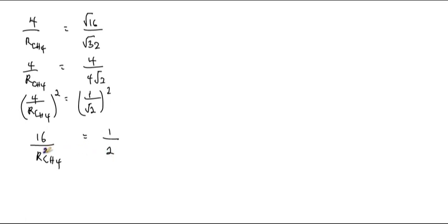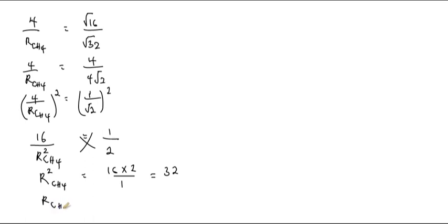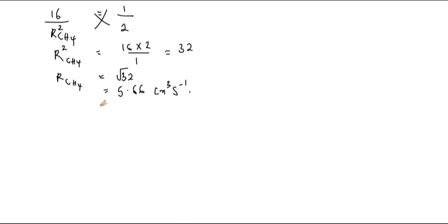Making r(CH₄) the subject by cross-multiplying: r(CH₄) = 4√2, so r²(CH₄) = 16 × 2 / 1 = 32. Taking the square root of both sides: r(CH₄) = √32 = 5.66 cm³ per second. We've now calculated the rate of diffusion of methane gas, but we're not done yet because the question asks for the time.